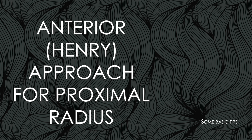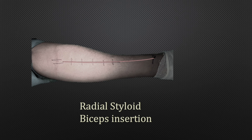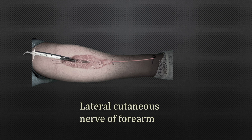In this video we'll see the basic tips required for exposure of the proximal radius using the anterior Henry's approach. The incision has to be planned according to the extent of the brachioradialis. The medial extent of the brachioradialis is limited by the biceps tendon proximally and the radial styloid distally, so the incision lies between these anatomical landmarks.